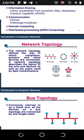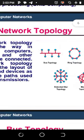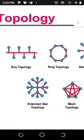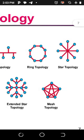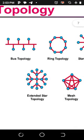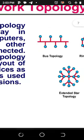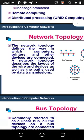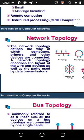Now let's look at network topology. Network topology defines the way in which computers, printers, and other devices are connected to a network. It describes the layout of wires, devices, and the paths used for data transmission. We have bus topology, ring topology, star topology, extended star topology, and mesh topology.